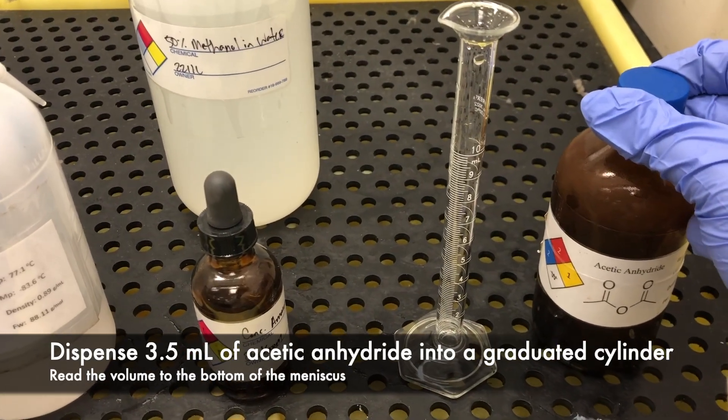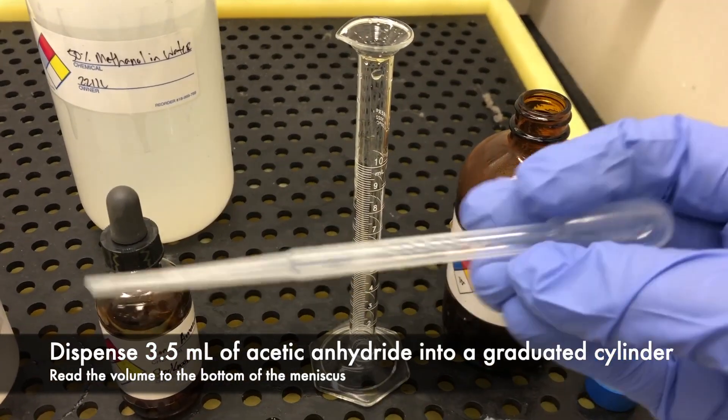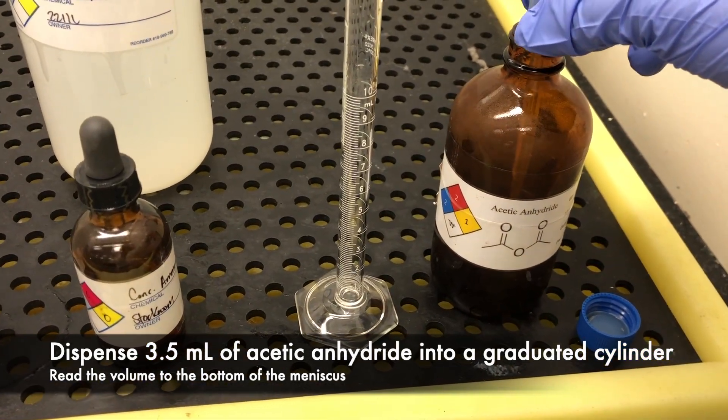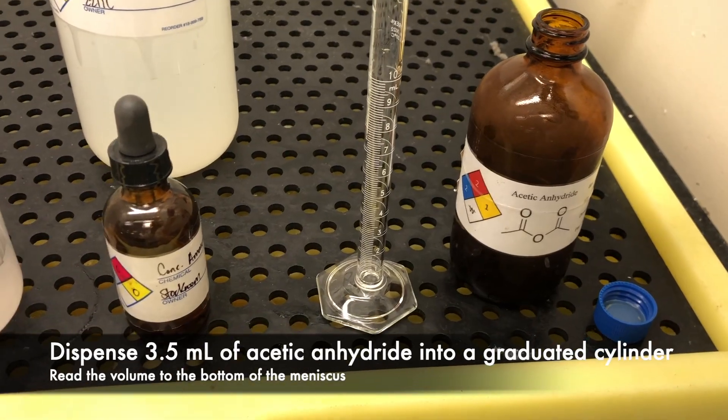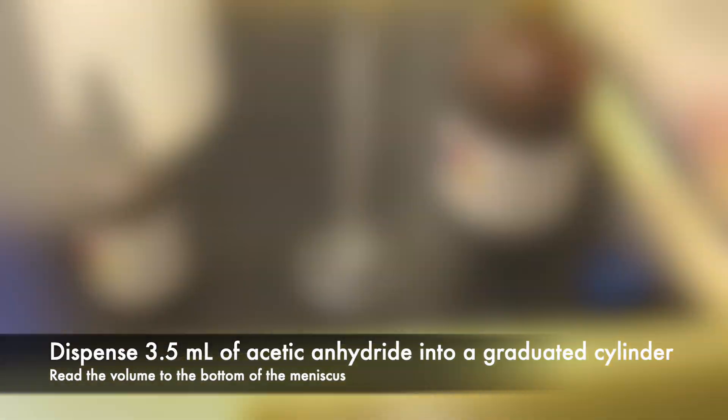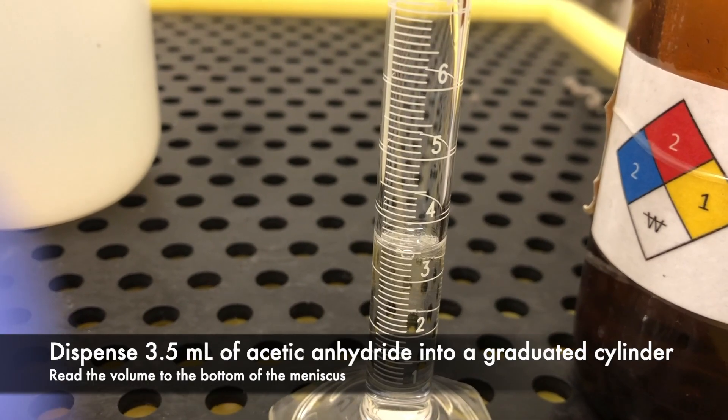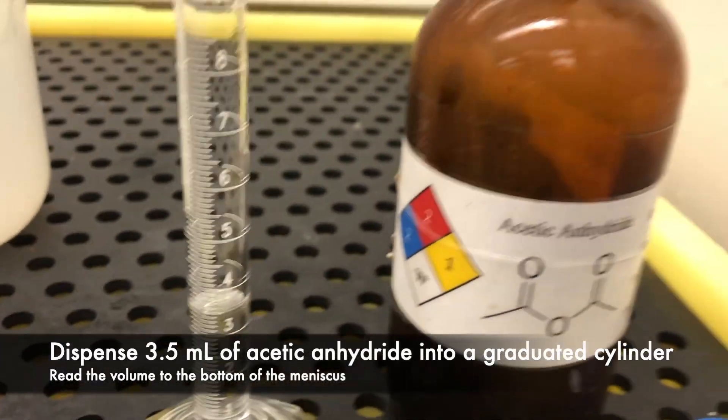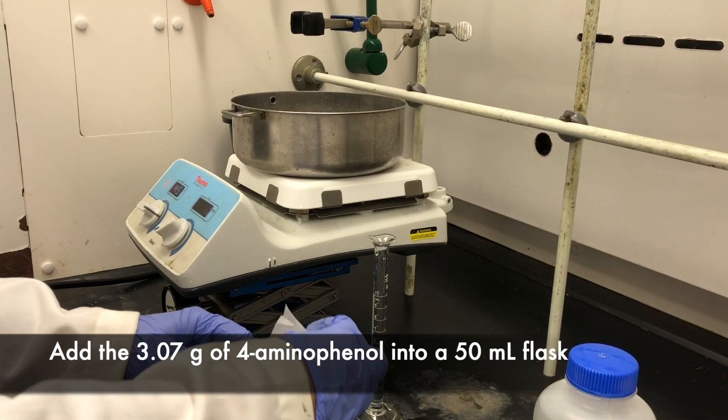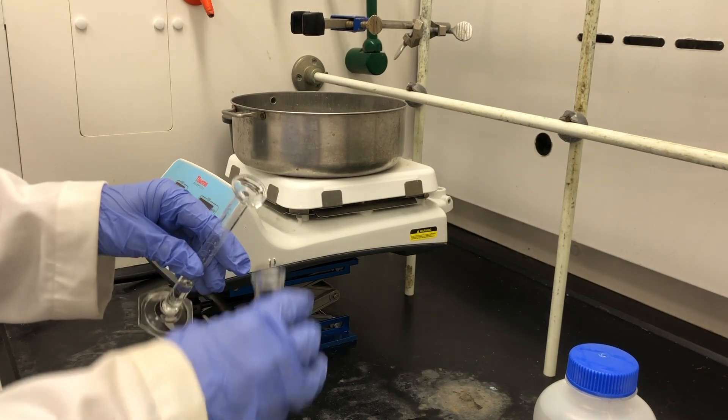The experiment calls for using acetic anhydride as one of our two reagents. I'm going to use a transfer pipette, a disposable transfer pipette, to measure out 3.5 milliliters of acetic anhydride. I'll go ahead and pour that in.